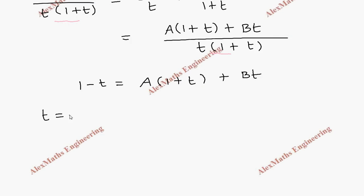Now we have to take suitable values for t. Let's take t as 0. Then 1 equals A, so we have the value of A itself, which is 1. Then the second value: let's take t equal to minus 1. This will become 2 equals minus B, so from this the value of B is minus 2. We got the value of A and B.